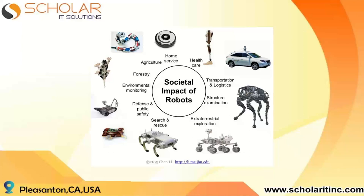Environmental monitoring is another key application — mainly weather monitoring, which is important for business activities and protecting people from natural disasters like tsunamis, floods, and excessive rainfall. Current weather stations are fixed in one place and not always efficient. A patrolling robot collecting environmental data from various locations could be much more efficient at predicting weather compared to fixed installations.